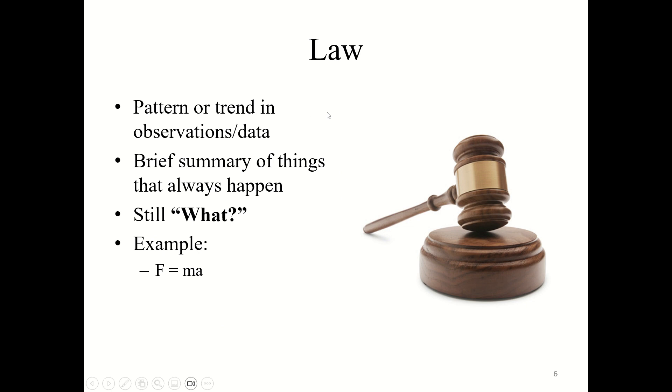So let's talk about what a law is. When a hypothesis is proven correct and it contributes to the body of knowledge, this hypothesis may become a law. Laws still explain what. Laws are a pattern or trend in observations and data. They're a brief summary of things that will always happen. They still describe what happens. For example, the law of gravity or this law based upon a force, F force equals mass times acceleration. This is a scientific law. Laws are kind of like machines. You put data in, you get data out, or you put observations in, you get predictions out. And they are consistent and repeatable.